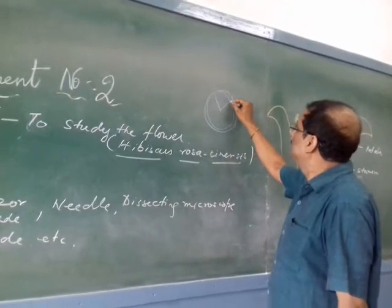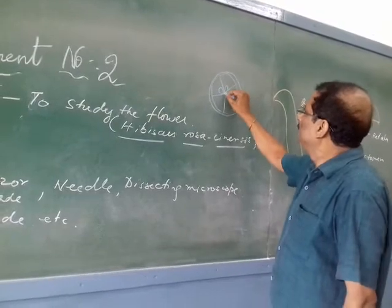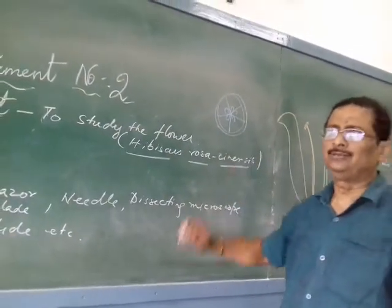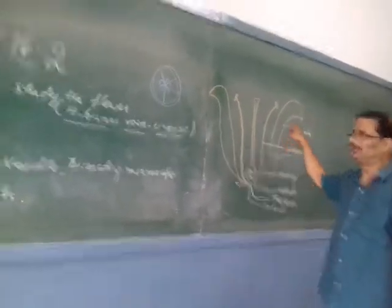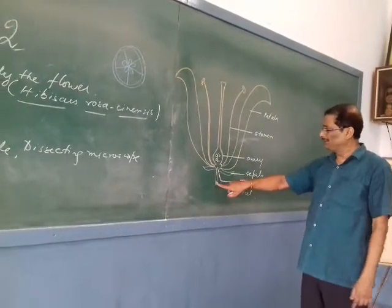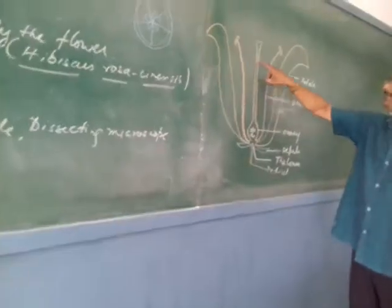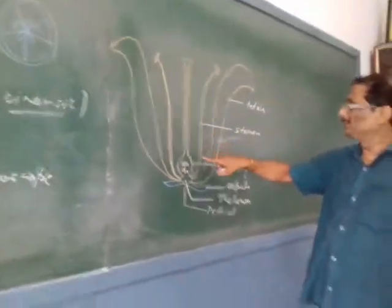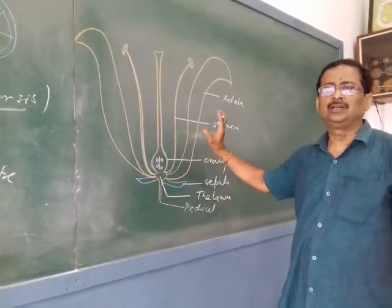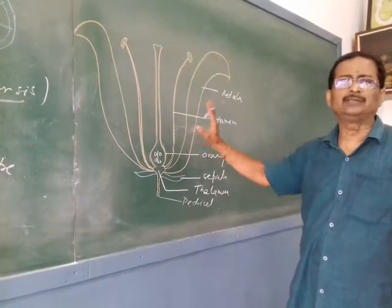The ovary will have five chambers — one, two, three, four, five — with the ovules located in the center. When you draw this in your practical notebook, you show the pedicel, the thalamus, the gynoecium (ovary, style, and stigma), the anther and filament, the petal, and the sepal. This typical flower structure represents the general plan, not specifically Hibiscus rosa-sinensis.